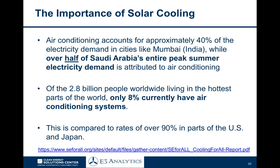Air conditioning accounts for approximately 40% of electricity demand in cities like Mumbai, India. Over half of Saudi Arabia's entire peak summer electricity demand is attributed to air conditioning — which is just a tremendous electricity demand from air conditioning alone. That underscores the tremendous importance and opportunity in solar cooling and other air conditioning technologies. Of the 2.8 billion people worldwide that live in the hottest parts of the world, only an estimated 8% currently have air conditioning systems, compared to adoption rates of over 90% in parts of the US and Japan. Very significant market potential.